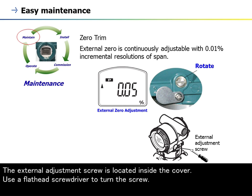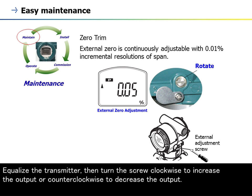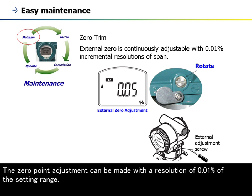The external adjustment screw is located inside the cover. Use a flathead screwdriver to turn the screw. Equalize the transmitter, then turn the screw clockwise to increase the output or counter-clockwise to decrease the output. The zero-point adjustment can be made with a resolution of 0.01% of the setting range.